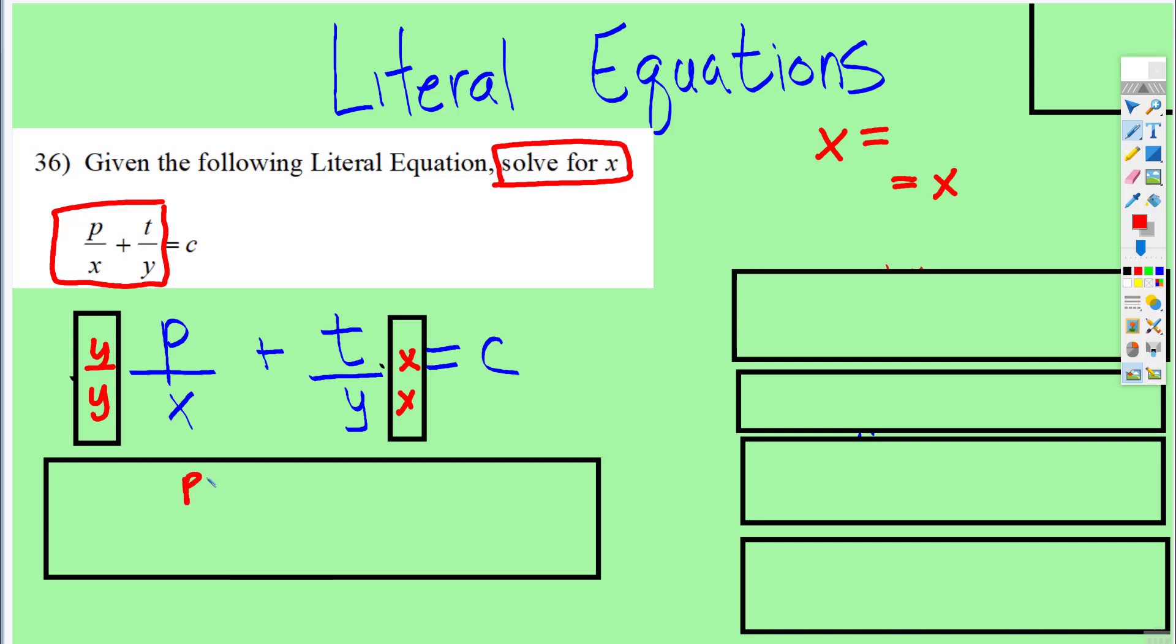I'm going to multiply this fraction t over y by x over x. And when I do that, I end up with p over xy plus t over xy. Those two are the same now. I could rewrite that as py plus tx all over xy is equal to c.